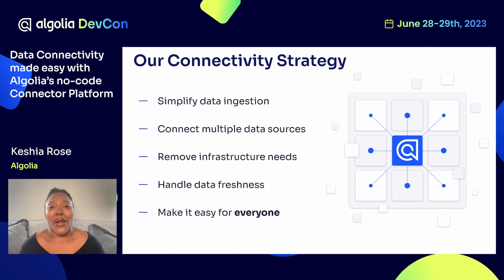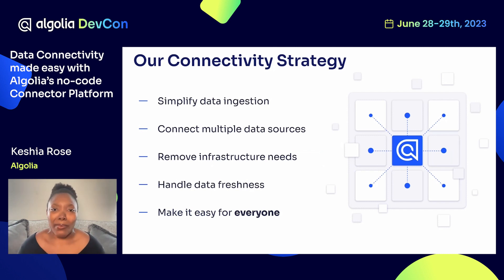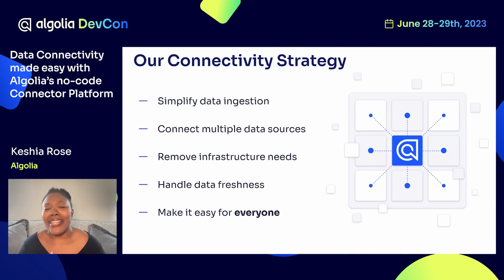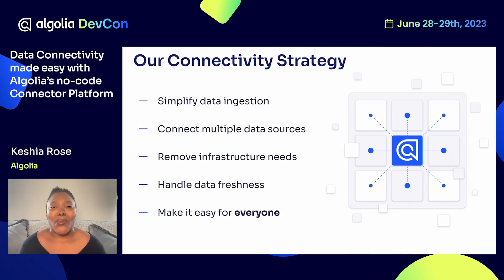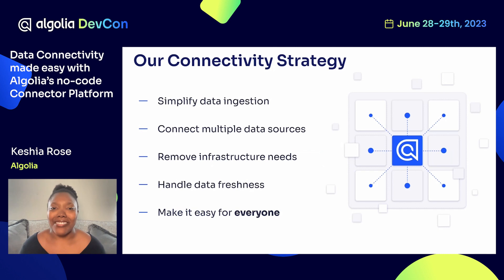That's our main focus for our connectivity strategy. First, we want to simplify the data ingestion process — remove steps from your plate wherever we possibly can, making it as easy and smooth as possible. We also want to allow connecting to multiple data sources, because we know that data can live in various places. We want to remove the need for you to build out new infrastructure and data processes, and we want to handle data freshness for you. Overall, we want to make it easy for anyone and everyone. For non-technical users, we've got a brand new UI to manage your connectors. And for developers, all of our tools are built on APIs that allow you to integrate them with your implementation.